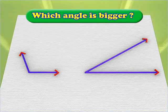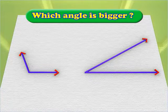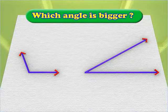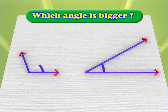The size of the arms does not decide the size of the angle. The size of an angle is decided by the turn made from one arm of the angle to the other.